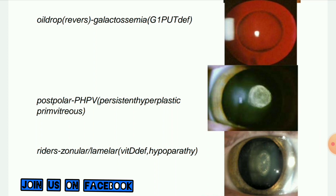Next image: Post-polar cataract — PHPV, persistent hyperplastic primary vitreous. It is also known as persistent fetal vasculature (PFV). This is a rare congenital developmental anomaly of the eye which results from failure of the embryological primary vitreous and hyaloid vasculature to regress.